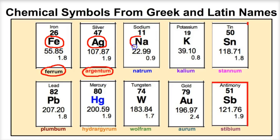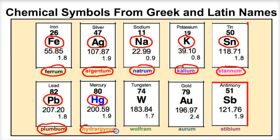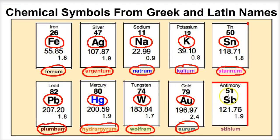Same with sodium — you might think it would be S-O, but the Greek or Latin word for sodium is natrum, which is where we get N-A from. Potassium is simply K because the Greek or Latin word is calium. Tin is S-N because in Greek or Latin it's stannum. Lead is P-B, not L-E, because in Greek or Latin that's plumbum. Mercury is H-G from its Greek or Latin name. Tungsten is W because the Greek or Latin word is wolfram. Gold is A-U because of aurum in Greek or Latin. And antimony is S-B because in Greek or Latin it's stibium.